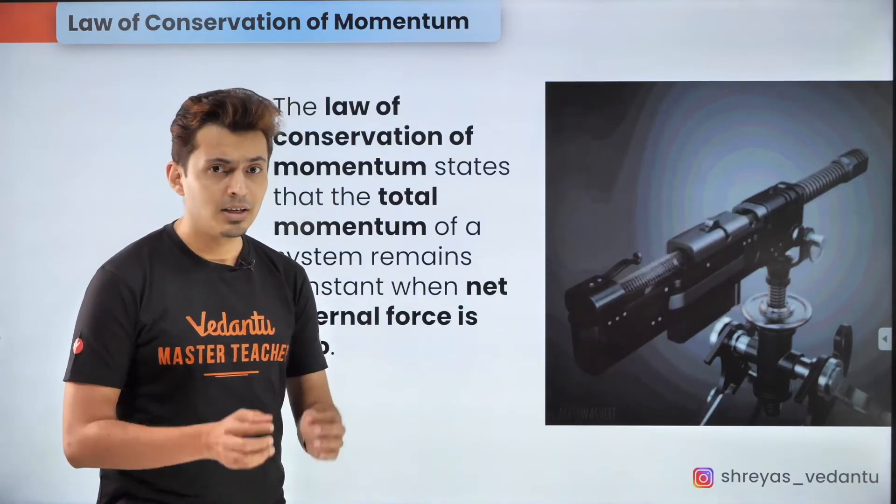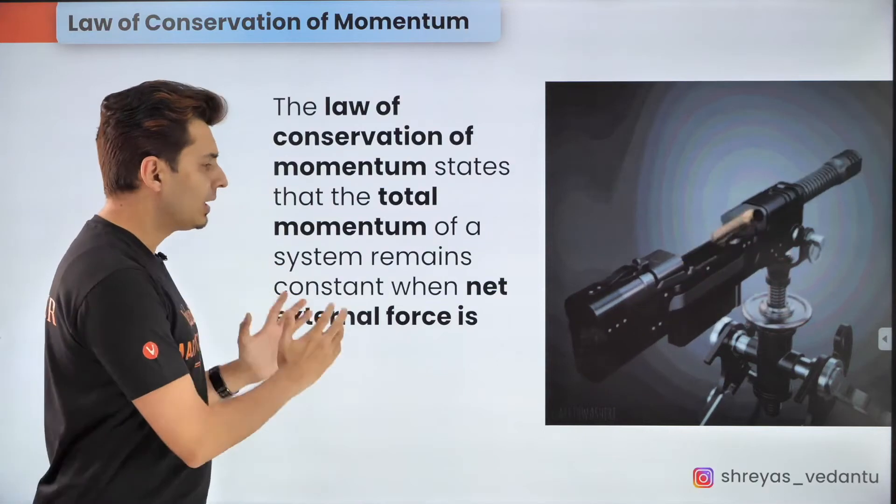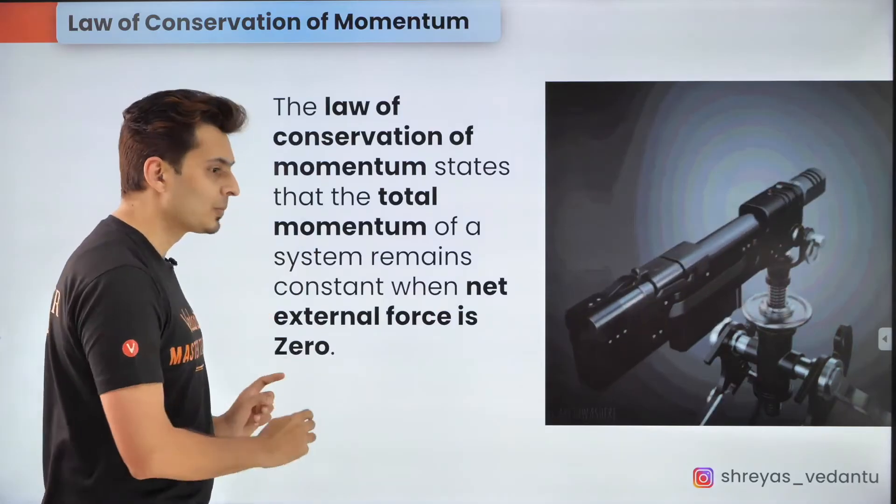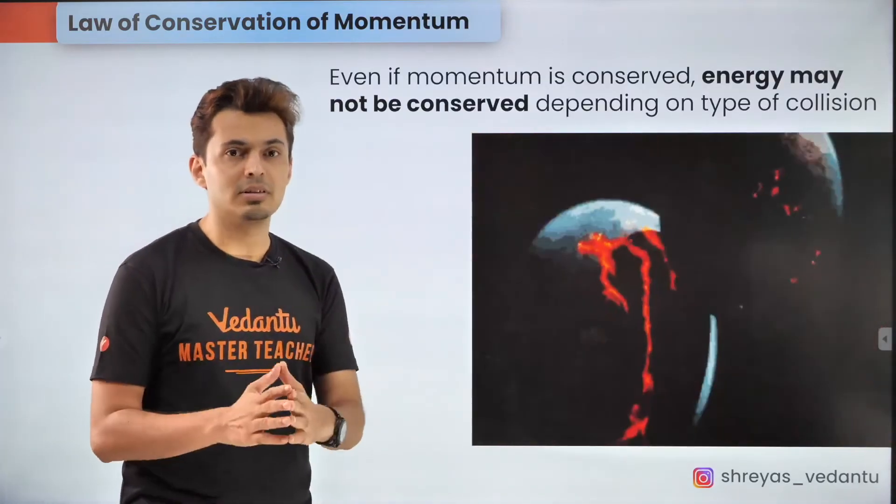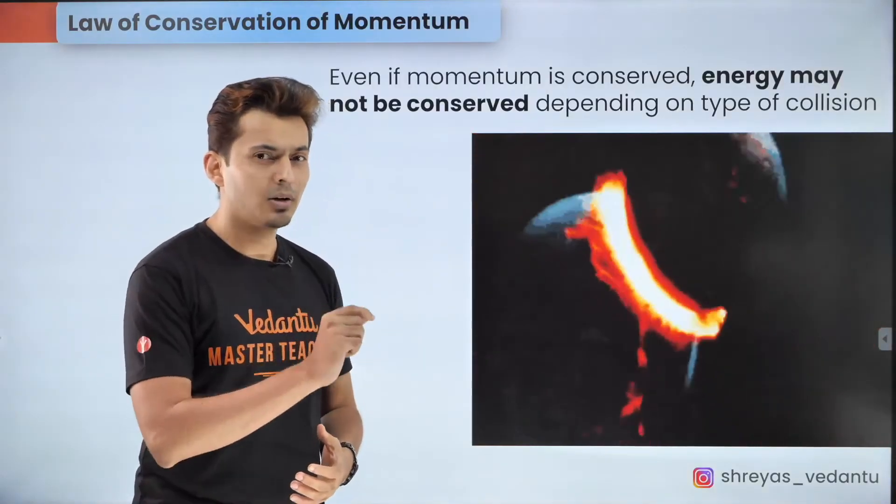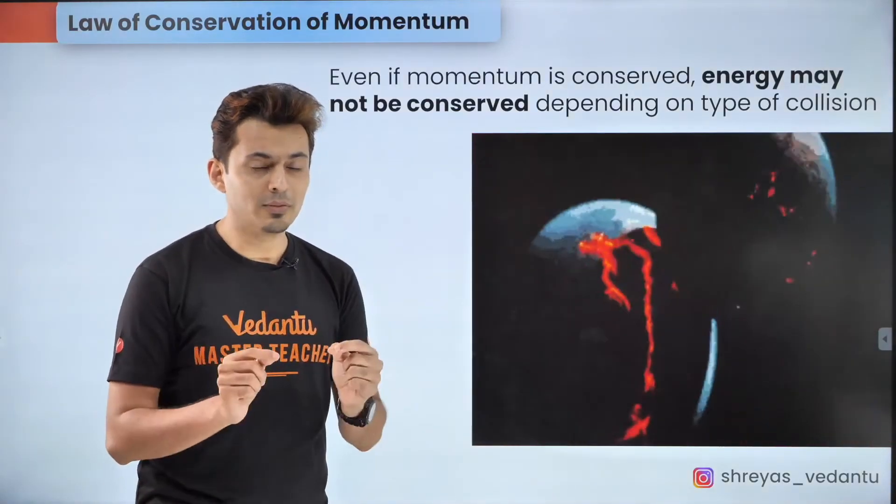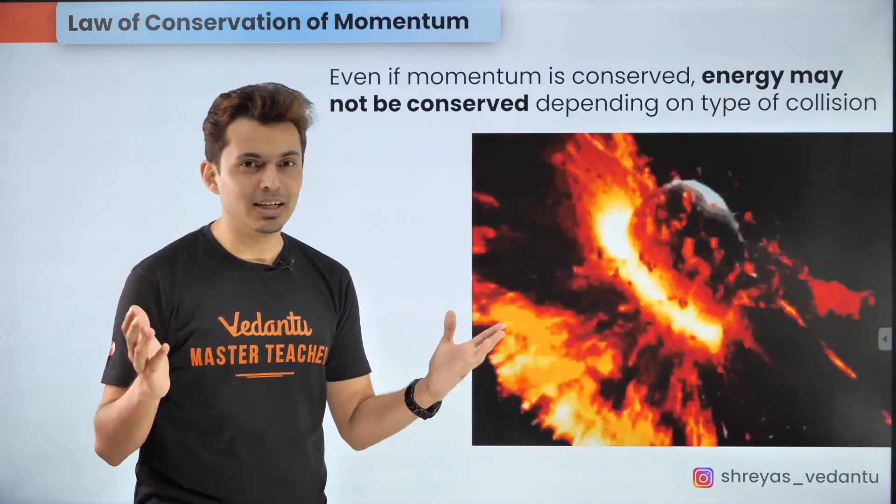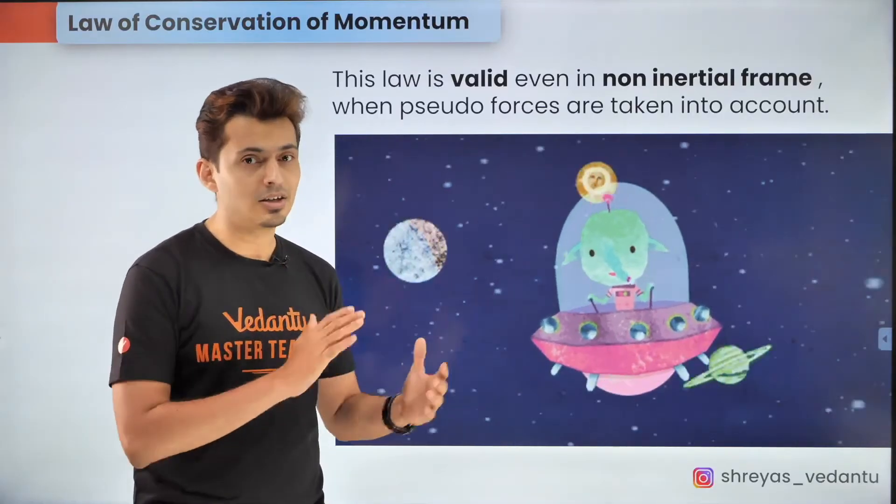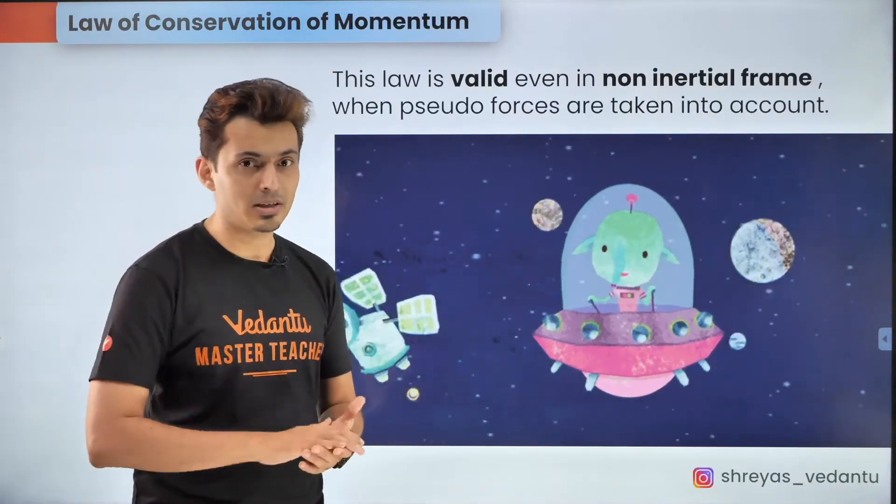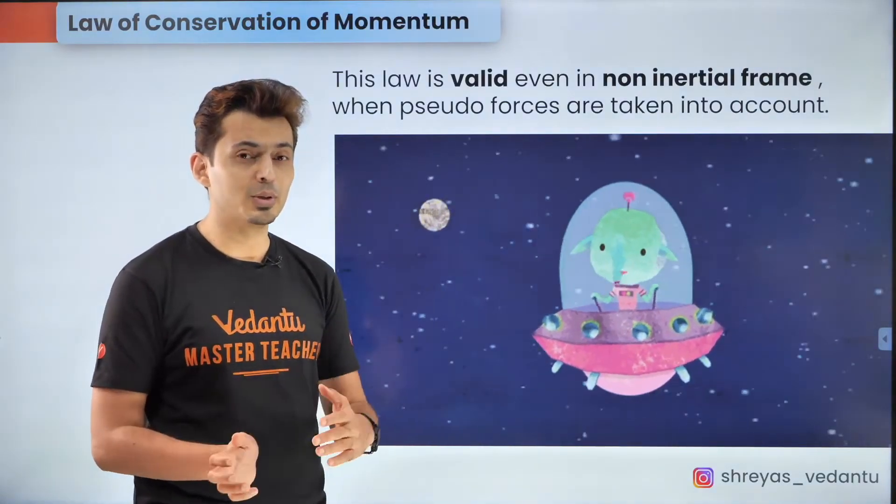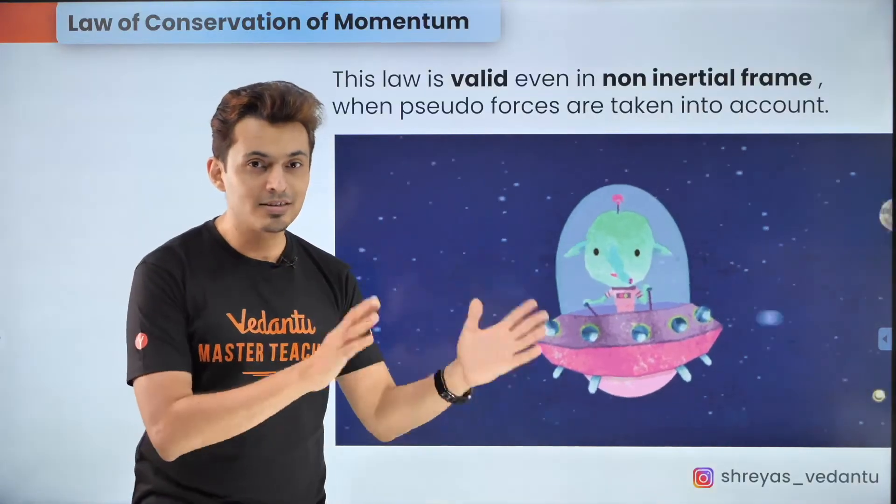Now that we have spoken about momentum let's also talk about when it is conserved. Now the law of conservation of momentum states that the total momentum of a system remains constant only if the net external force is zero. Now even if the momentum is conserved it is not compulsory that the total mechanical energy is conserved because during the collision or explosion you might find that the energy is lost in the form of heat, light, sound and other forms. Also remember that even if you are a non-inertial observer you can use this principle provided you have taken into account the pseudo force and the sum of the pseudo force and the other forces should add up to give zero.